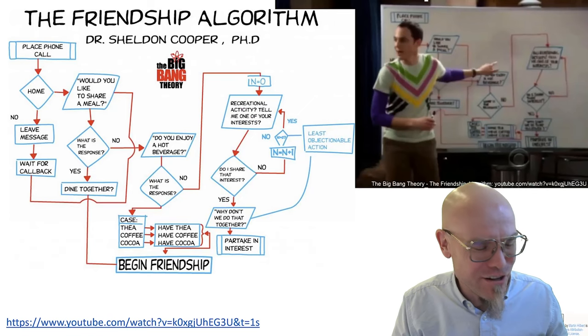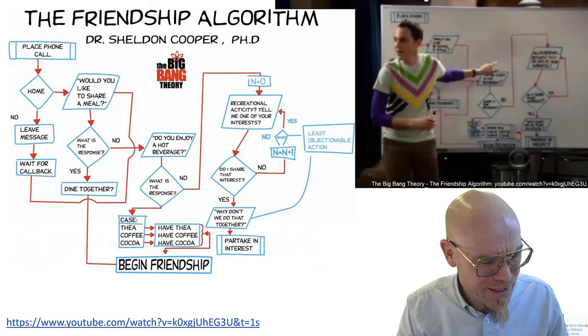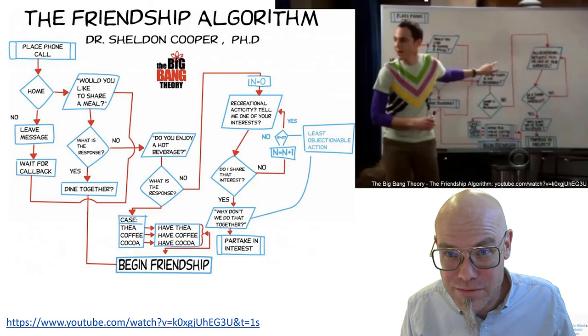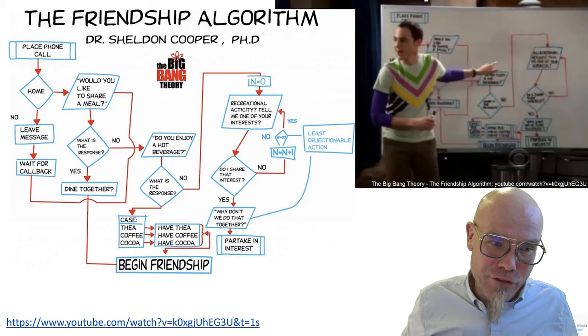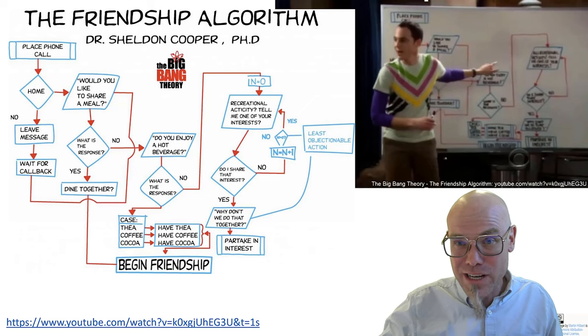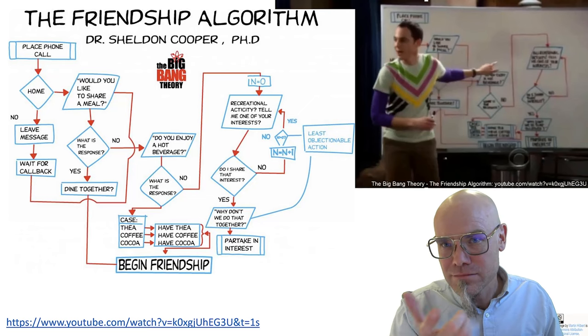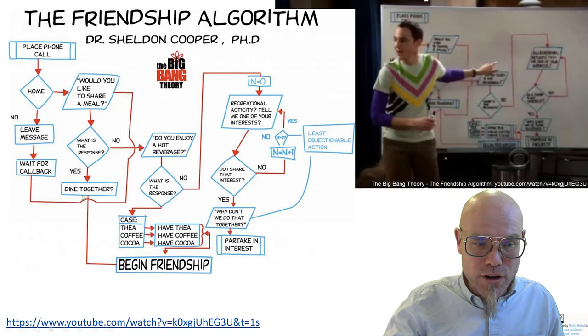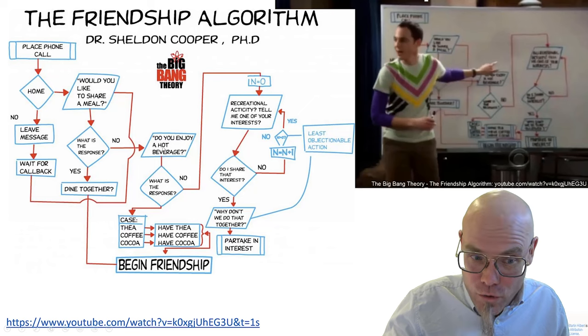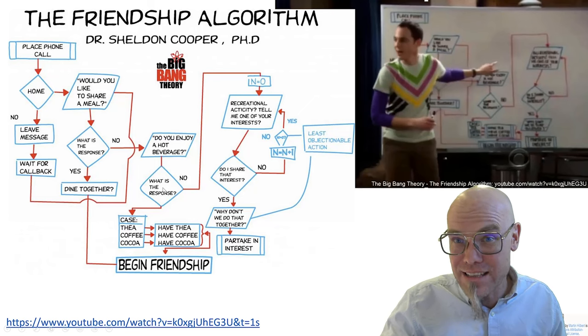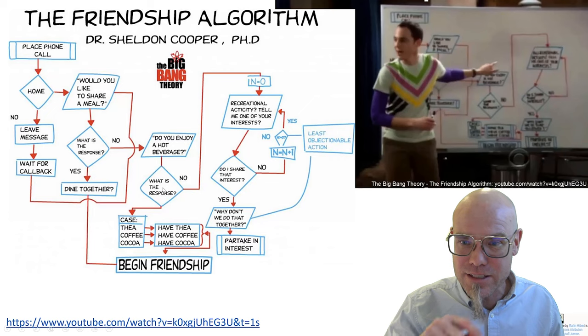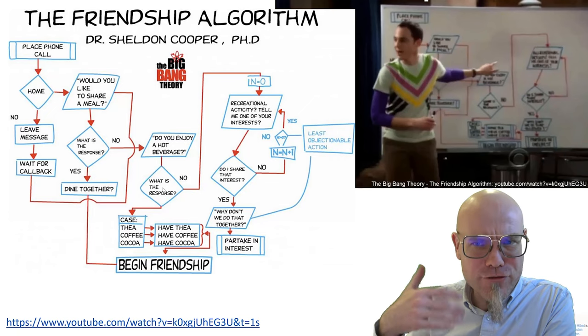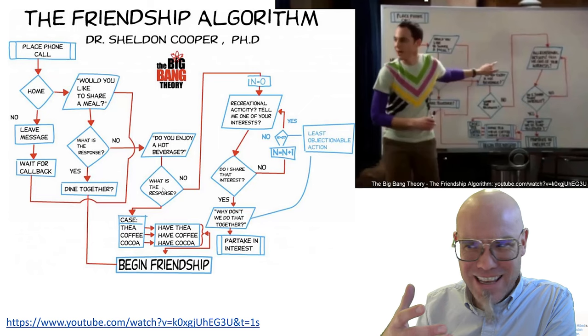Here I have another example of Sheldon Cooper, a sitcom character of a scientist who developed the friendship algorithm. For the rest of us nerds, if we don't know how to make friends, Sheldon wrote it out. He made a tacit recipe explicit. You ask him, would you like to share a meal? What's the response? Yes, then dine together. If no, then do you enjoy a hot beverage? Yes. If-then-else, if-then-else, you can rattle through. I invite you to watch this little clip to see what it does.